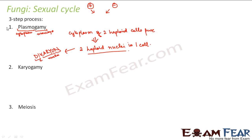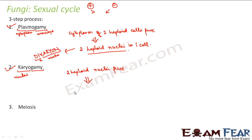In the second step, karyogamy — 'karyo' means nucleus and 'gamy' means marriage — the two haploid nuclei fuse. The result is one diploid zygote. This fusion is known as fertilization, because fertilization is the fusion of two haploid cells to form a diploid cell.